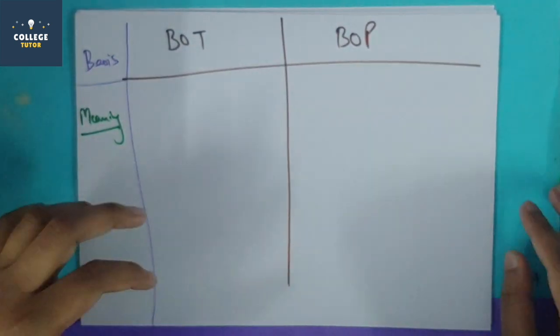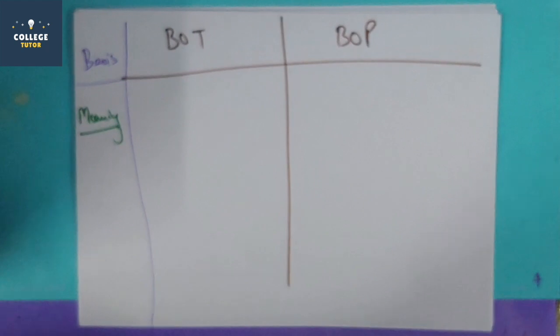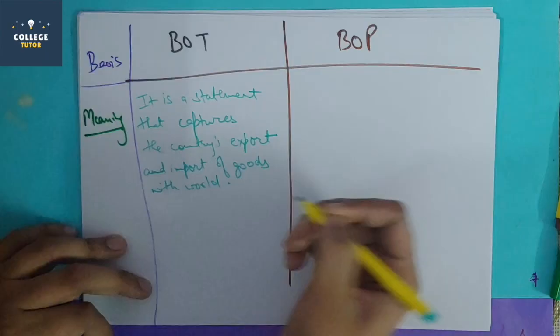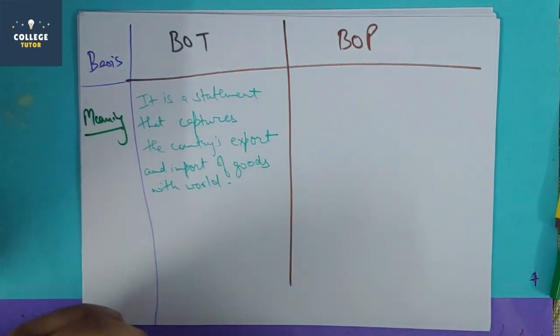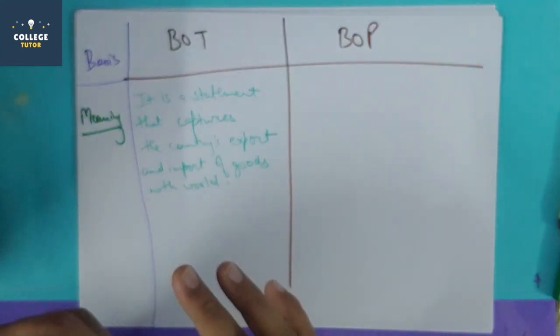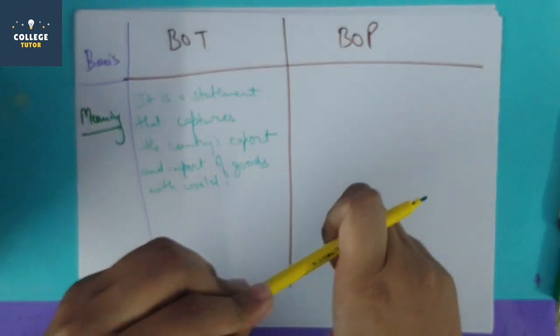Balance of trade, what I have explained to you - balance of trade is a statement which tells you how many goods are exported and how many imports. In balance of payment, I have all economic transactions involved in a country with the whole world.